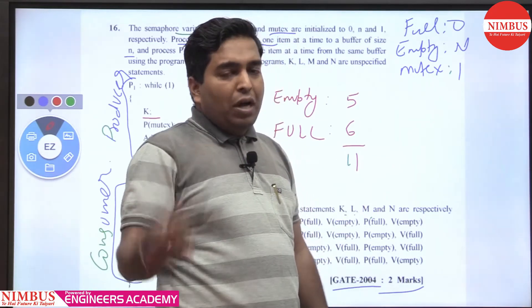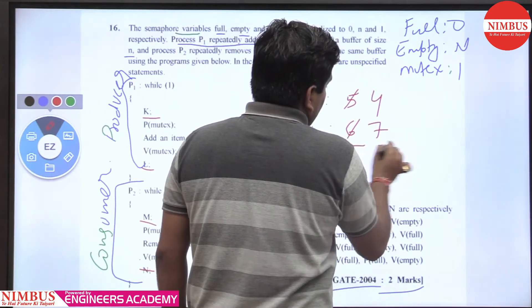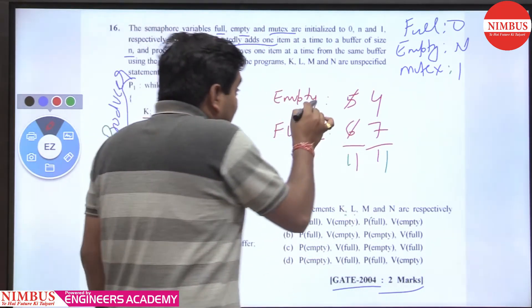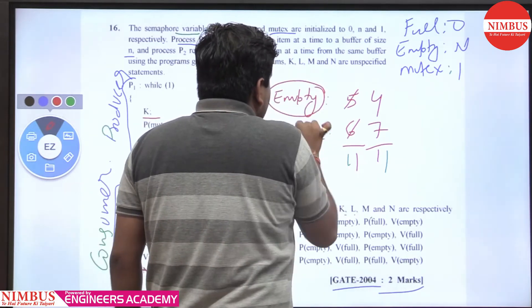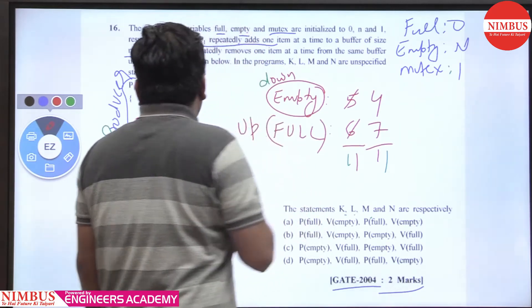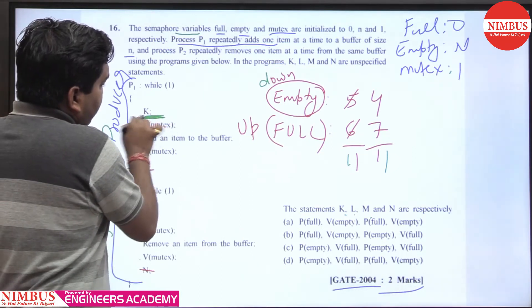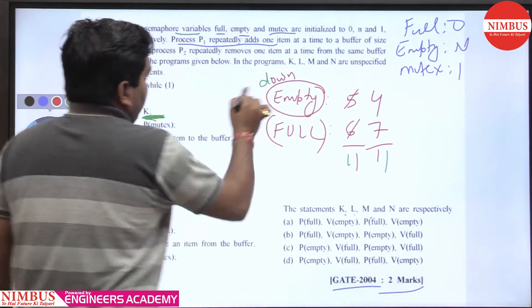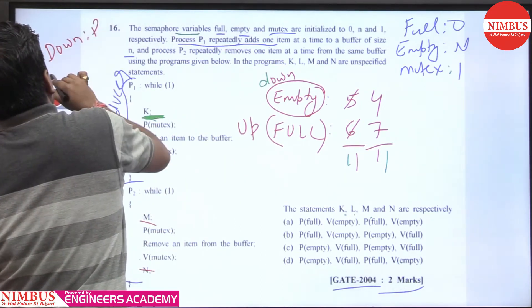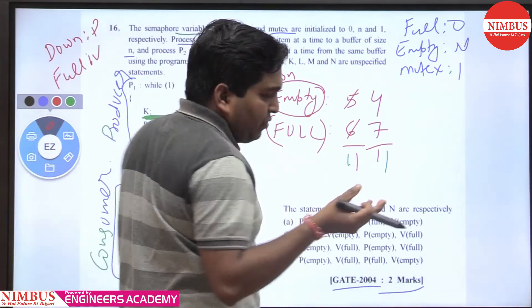When the producer comes and produces, empty should decrease and full should increase. Whenever the producer comes, it decrements empty - we down the empty - and increments full.